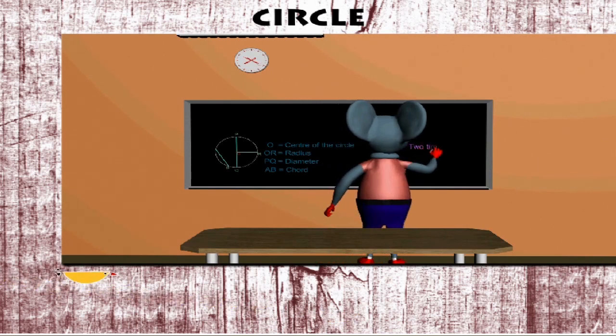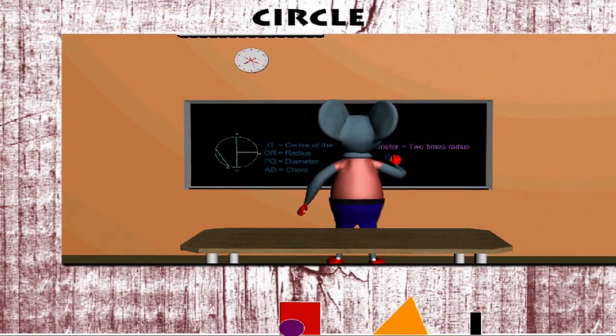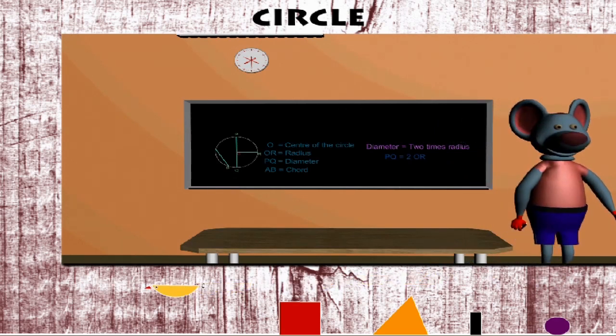Robbie explains that in a circle the diameter is always twice the radius. Interesting fact Robbie, that was fun.